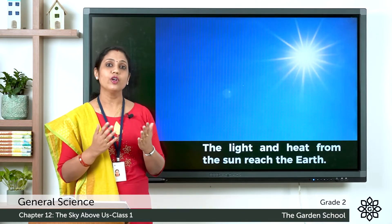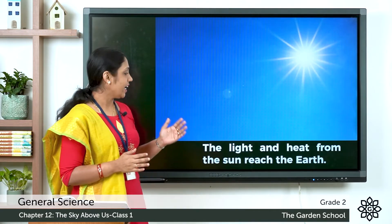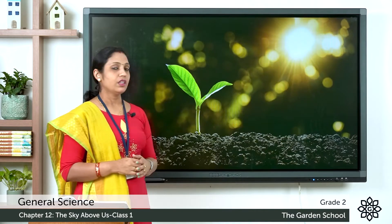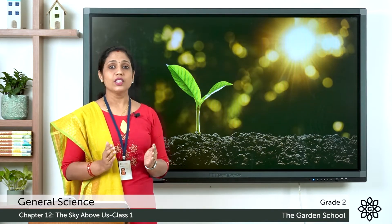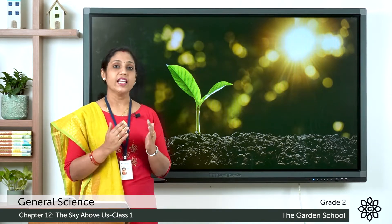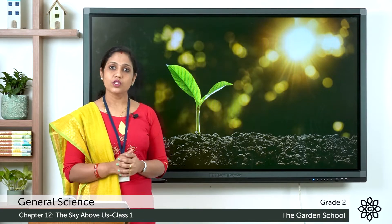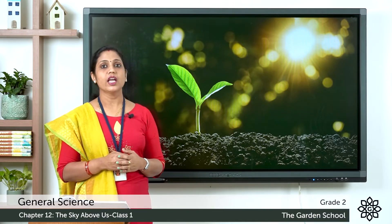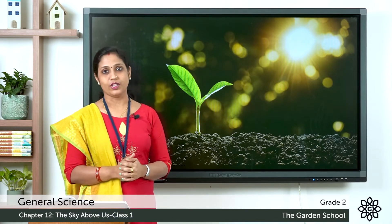During daytime we have sunlight, and we get that from the Sun. Plants also need sunlight — you know that plants prepare food using sunlight. So what will happen if the Sun was not there? Plants will not be able to make food and there will be no food on Earth. So the Sun is very important to us.